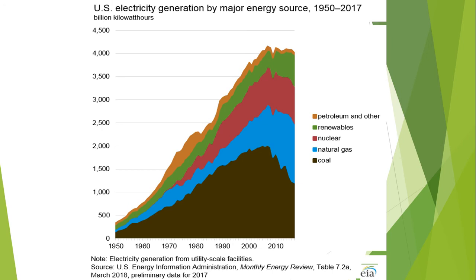This is the continuation — electricity generation from utility-scale facilities — and this graph shows data from 2017. Coal has a brownish shade. The next is natural gas. This is the graph from 1915 to 2017. It also shows nuclear energy, renewables, and petroleum. Observe the trend.